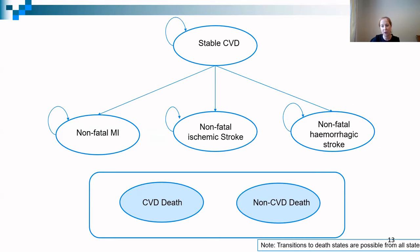The basic model structure is a multi-state model, which is a type of state transition model that accounts for competing risk of events and time-varying hazards. Multi-state describes models where there are transitions between states modelled in continuous time, in contrast to most traditional state transition models where transition probabilities are modelled for fixed time points. In this model there are tunnel states corresponding to each non-fatal event, used to account for how long since an event occurred. When these are included, there are over 852 health states in the model. This highlights one of the advantages of working in R, in that it would be extremely difficult, if not impossible, to build this type of model in Excel.